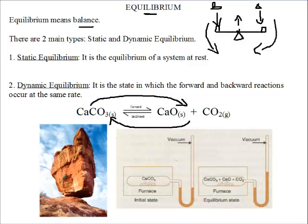So here, this rock is in a state of static equilibrium. It is static because it is at rest and there are forces balancing this rock. Over here, calcium carbonate is breaking down to form calcium oxide and carbon dioxide. The reverse also happens. They are happening at the same rate. So we see dynamic equilibrium is reached.